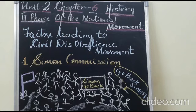We also saw the objectives, programs, and activities of the Non-Cooperation Movement. Today we shall continue with the same lesson, Unit 2, Chapter 6, and cover the factors that led Gandhiji to start the Civil Disobedience Movement.